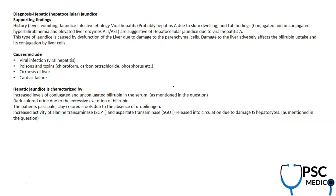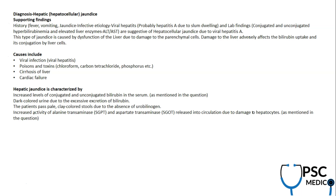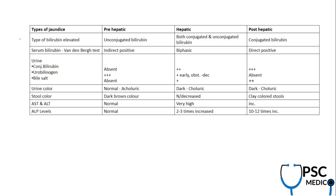For classification, hepatic jaundice supportive findings are noted. Don't always go with one option — the differential can include hepatocellular jaundice due to viral hepatitis, liver poisoning, cirrhosis, or cardiac failure. In this scenario, viral infection is the most common cause. There are three types of jaundice: pre-hepatic, hepatic, and post-hepatic.